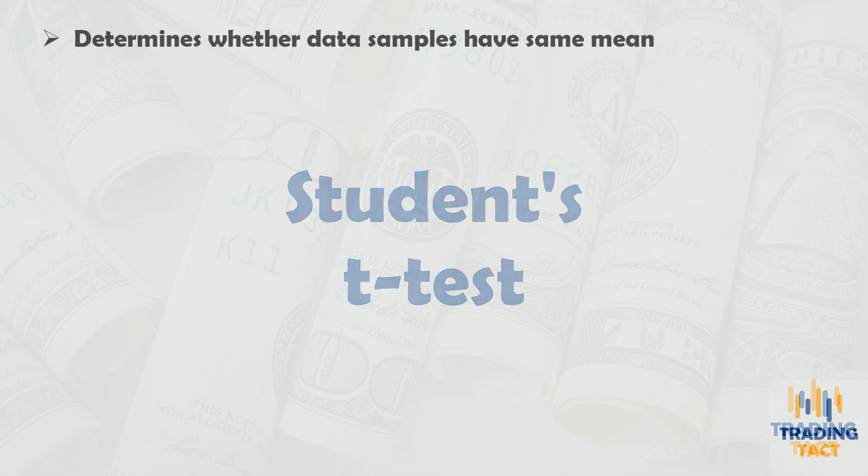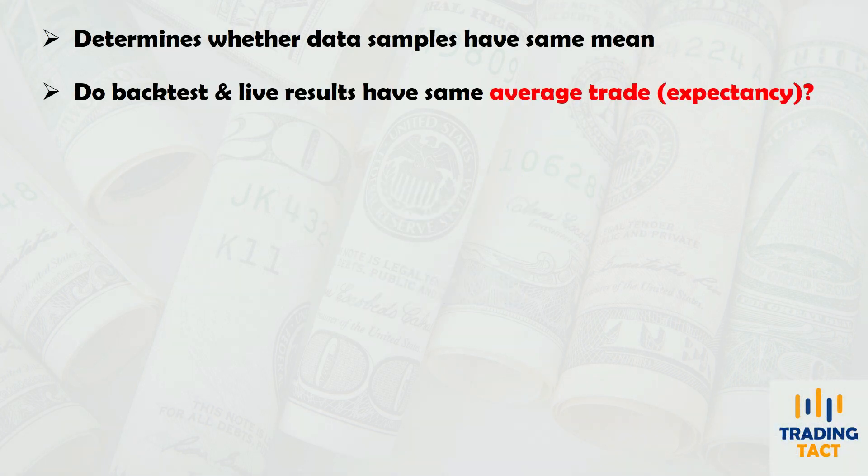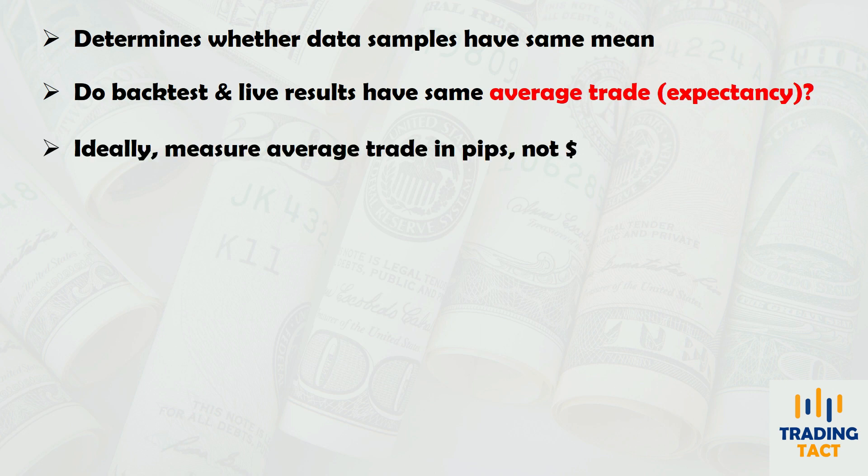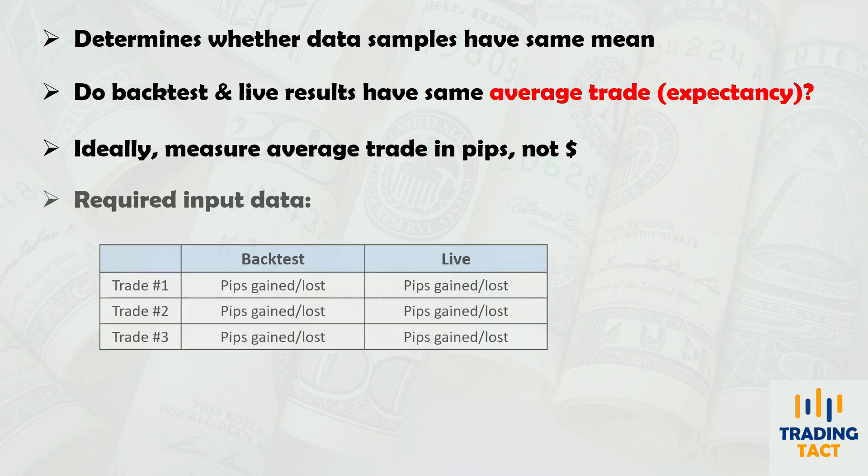This first statistical test — the t-test — determines whether two data samples contain the same mean. In our context, this means determining whether your trading results have a similar average trade. I prefer to measure the average trade in pips rather than absolute dollars, since the pip value of each currency changes with time. The input data for the t-test will be the pips gained or lost for every trade in your backtest and live sample.